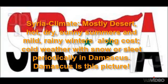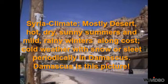Syria climate: mostly desert, hot, dry, sunny summers and mild. Rainy winters along the coast. Cold weather with snow or sleet periodically in Damascus. Damascus is this picture.